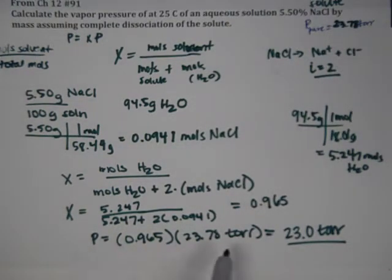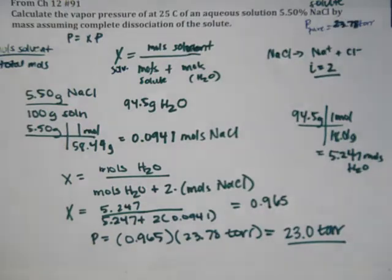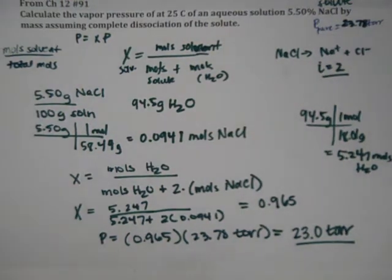And then, we just take our final pressure times the mole fraction of solvent. That's the key, of solvent. Okay. And it should be lower than you started with, right? It's vapor pressure lowering. So, you know you did something wrong if your mole fraction is above 1, or you end up with a number bigger than 23.8, which is your pure of the solvent.